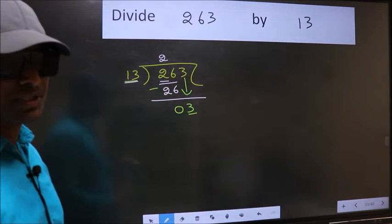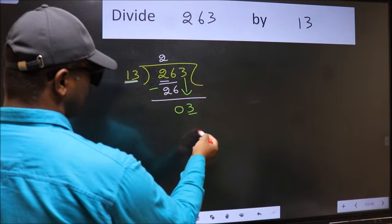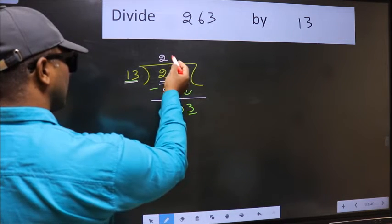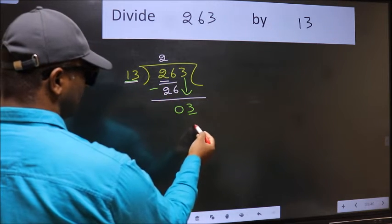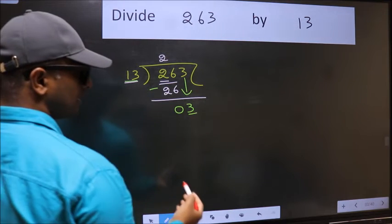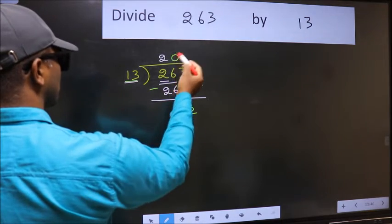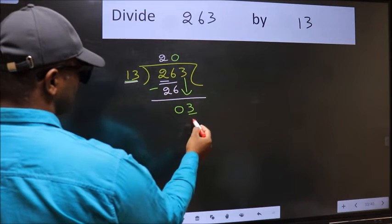Instead what you should think of doing is which number should we take here. If I take 1, we will get 13. But 13 is larger than 3. So what we should do is we should take 0. So 13 times 0, 0.